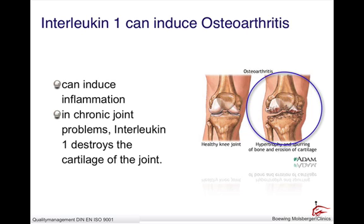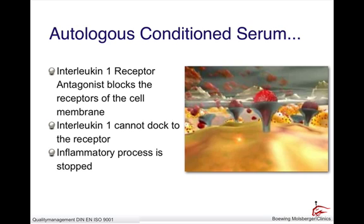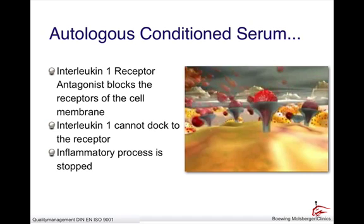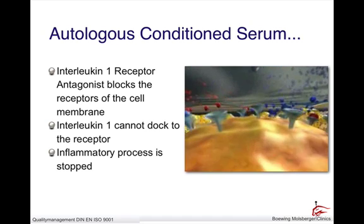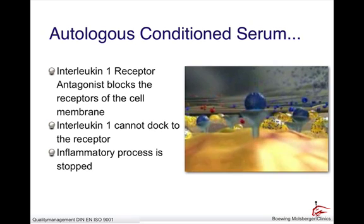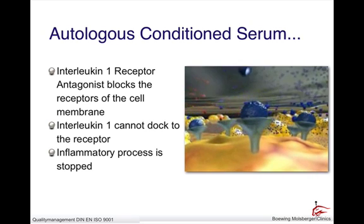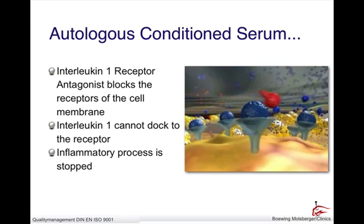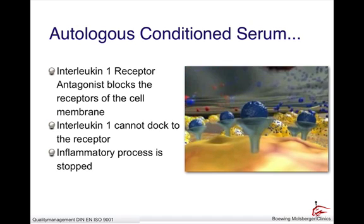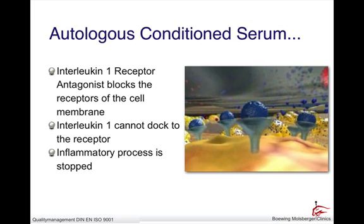So what can be done against this destructive cytokine? Interleukin-1 binds to the receptor of the cell membrane and induces inflammation. But interleukin-1 can be stopped by interleukin-1 receptor antagonist — also known as IRAP — which simply blocks the receptors of the cell membrane and thus can protect the cartilage tissue from the destructive impact of interleukin-1.